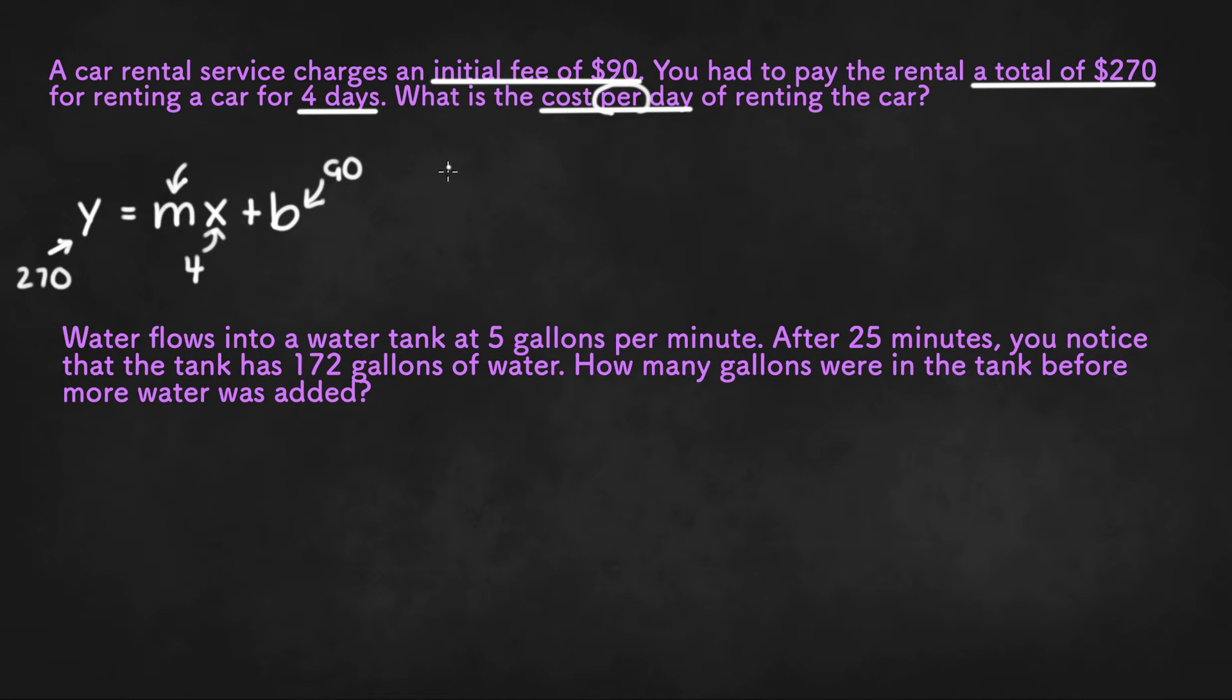So once we plug the numbers into the equation, we'll get 270 equals m times 4 plus 90. Now we can subtract both sides by 90, and we'll get 270 minus 90, or 180 equals m times 4, or we can also write that as 4m.